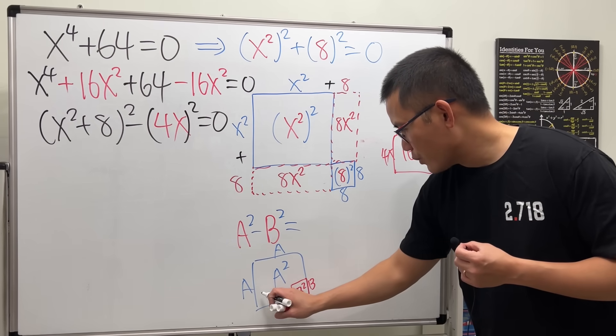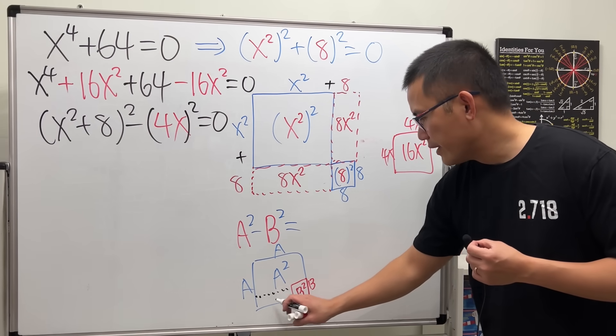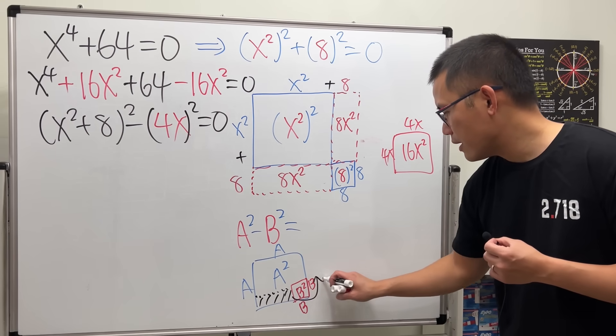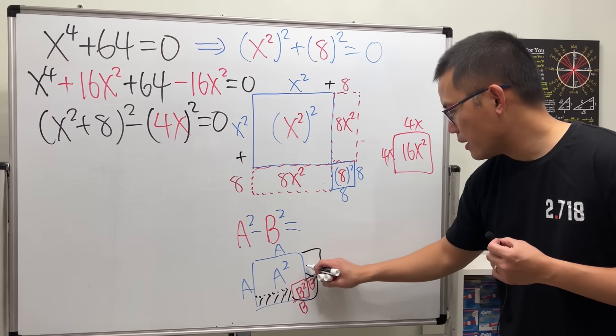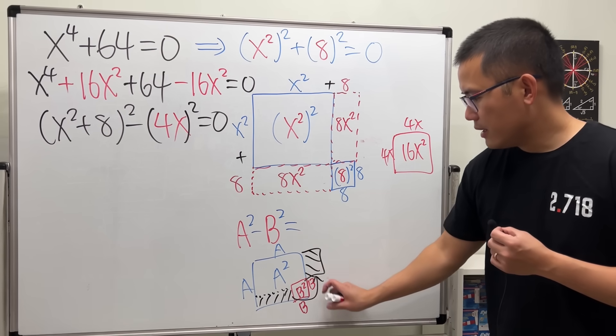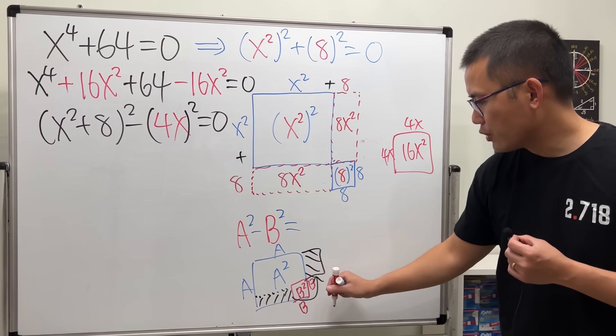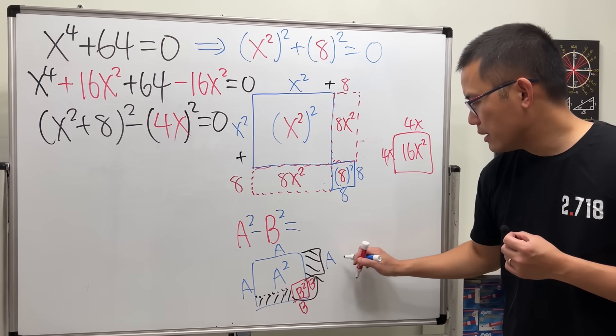So, now we have a square with a missing corner. Don't worry. We're just going to make a cut. And then put this portion here, up here. Earlier, we cut off b. So, this part is just going to be a minus b.